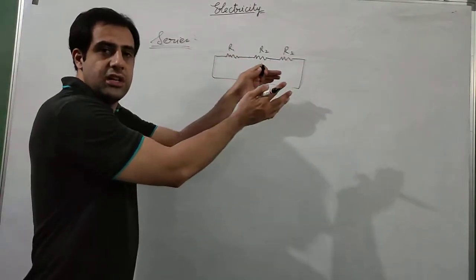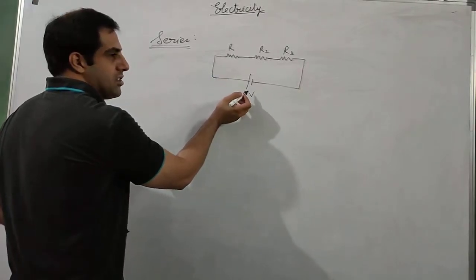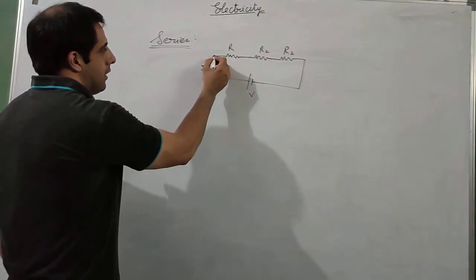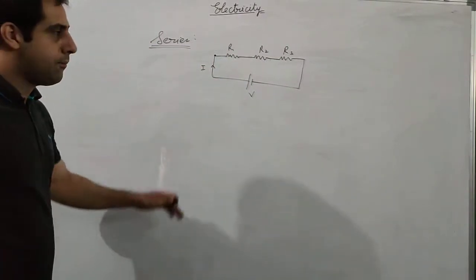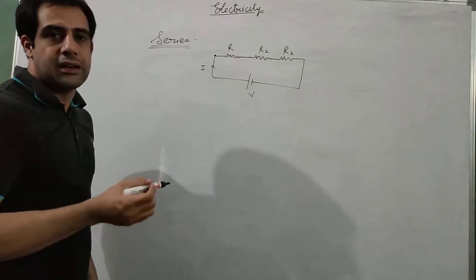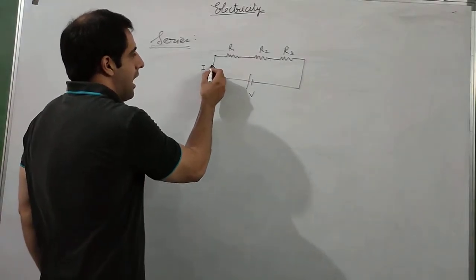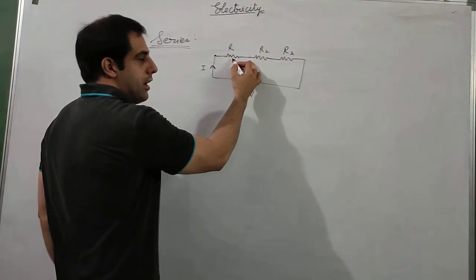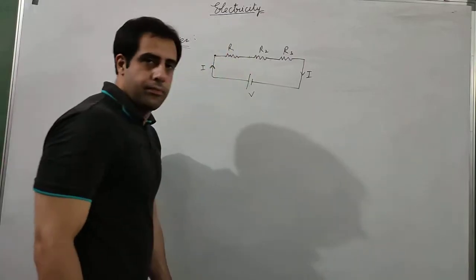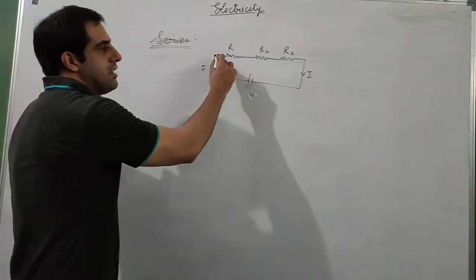When resistors are connected like this one after the other, we call it a series combination. Now in series combination, we have a battery of potential difference V and a current I is flowing. When current I reaches a junction it has only one path to go — there are no other branches of the circuit. So the current I will not be divided; it will cross R1, then R2, then R3 and return to the battery. This means the current is the same throughout the circuit.